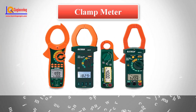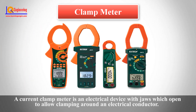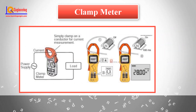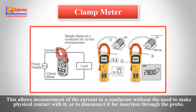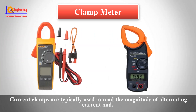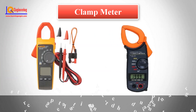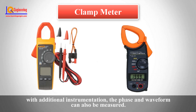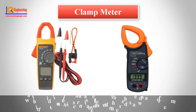Clamp Meter: A current clamp meter is an electrical device with jaws which open to allow clamping around an electrical conductor. This allows measurement of the current in a conductor without the need to make physical contact with it or to disconnect it for insertion through the probe. Current clamps are typically used to read the magnitude of alternating current, and with additional instrumentation, the phase and waveform can also be measured.